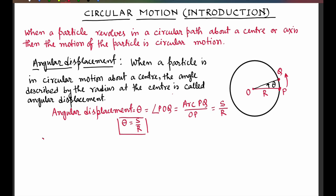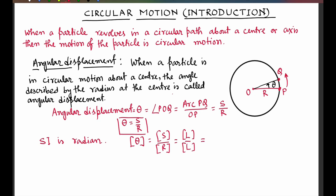The SI unit of angular displacement is radian. The dimension of angular displacement is the dimension of S by dimension of R. As both the arc and radius are represented by length, this is L by L. Therefore, the dimension of angular displacement is dimensionless.